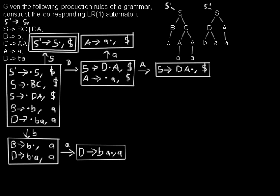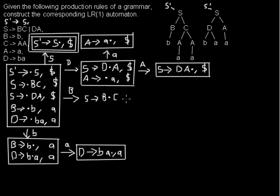I nearly forgot an arrow. But we're not done yet — I haven't considered the possibility of getting a whole B. When we were at the terminal b and used that rule, we've now seen the whole right-hand side of the B rule. We got non-terminal B, and we're allowed to move the dot over B.